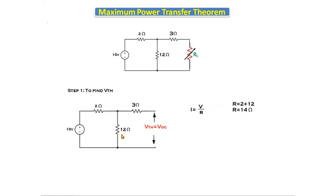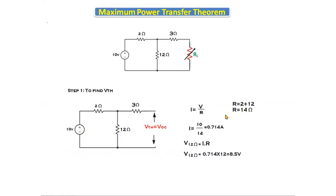The 2-ohm and 12-ohm resistors are connected in series, giving a total resistance of 14 ohms. Using I equals V/R with V equals 10 volts and R equals 14 ohms, we find the current. Since the same current passes through both resistors in series, the voltage across the 12-ohm resistor is found using V equals I into R.